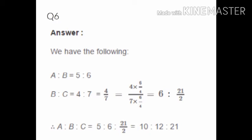Question 6 also involves finding a:b:c. Given a:b and b:c, first reduce b:c to lowest form, which gives 6:21/2. Writing a:b:c = 5:6:21/2, and multiplying all terms by 2 gives the final answer 10:12:21.